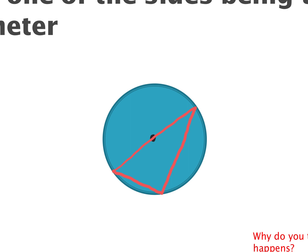I want you to think about why everyone has just drawn a right triangle. Discuss in your groups. Every single person drew a right triangle — yours looks different from mine, but both are right triangles. Daniel's is a right triangle, Juan's is a right triangle. It definitely has to do with the fact that one of the sides was a diameter — but why would that make all of our triangles right triangles?